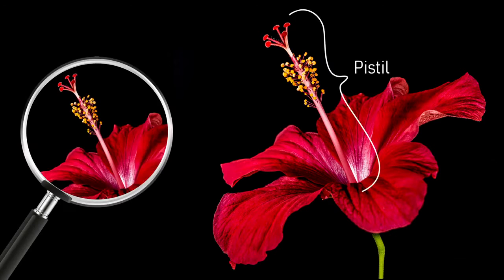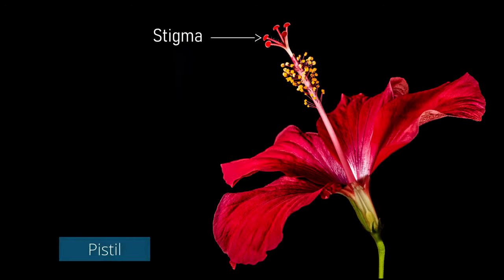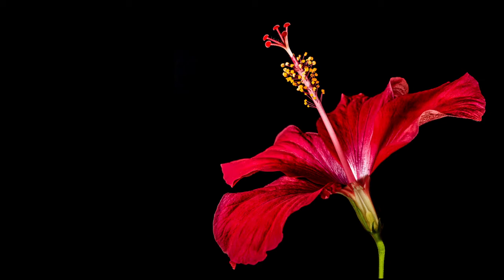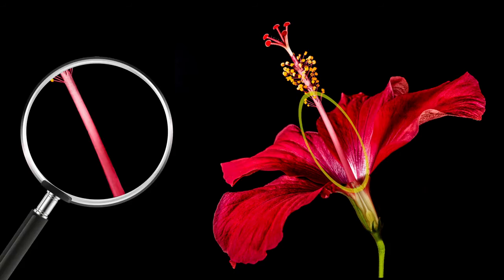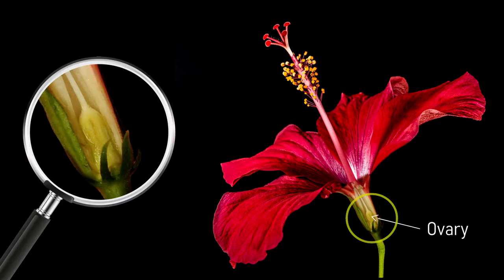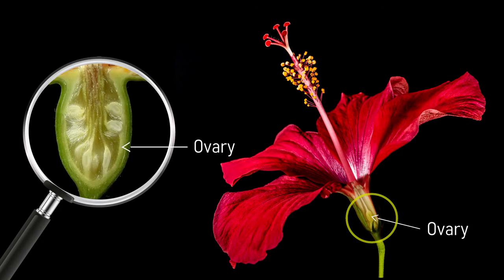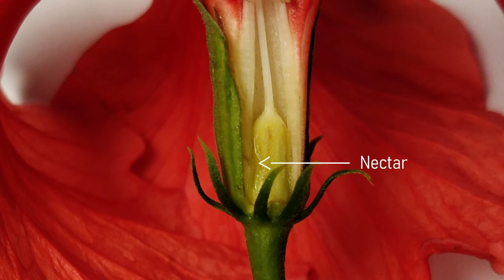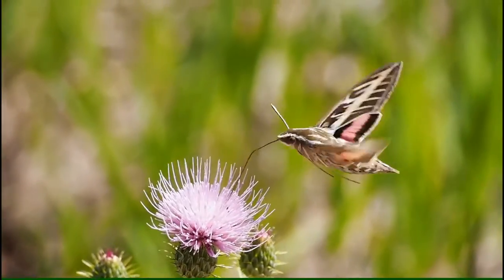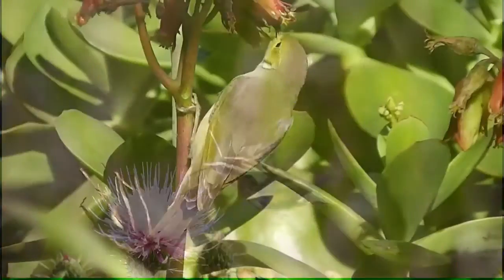The female part of the flower is called the pistil. It is made up of the stigma, style, and ovary. The stigma is usually hairy or sticky to trap the pollen grains. The style connects the stigma to the ovary. The ovary, which is shaped like a capsule, is located at the base of the flower. It contains the ovules, or the eggs.